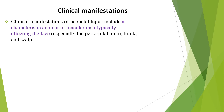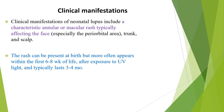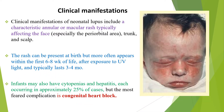Clinical manifestations of neonatal lupus include a characteristic annular or macular rash, typically affecting the face, especially the periorbital area, trunk, and scalp. The rash can be present at birth, but more often appears within the first 6-8 weeks of life after exposure to ultraviolet light, and typically it lasts 3-4 months.